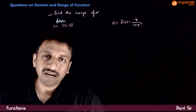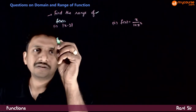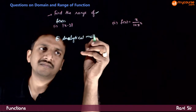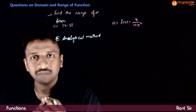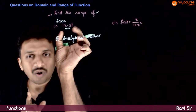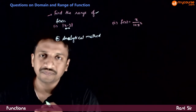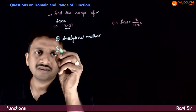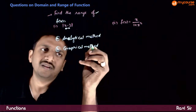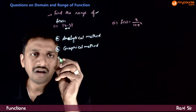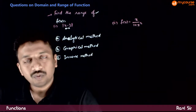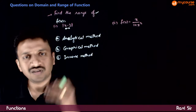There are different ways in which you can find the range of a function. You can directly find the range by the analytical method, or you can use the graphical method, or you can also use the inverse method. Depending on the question, whatever is useful, you can use the different methods.